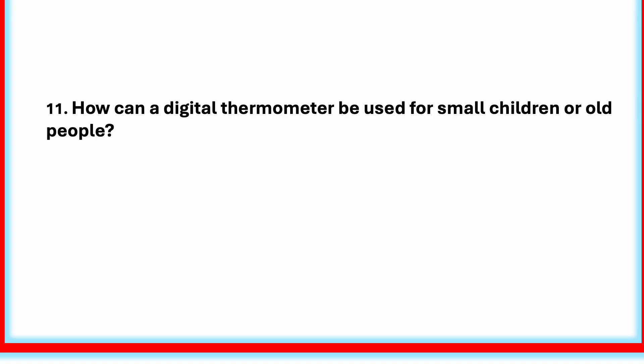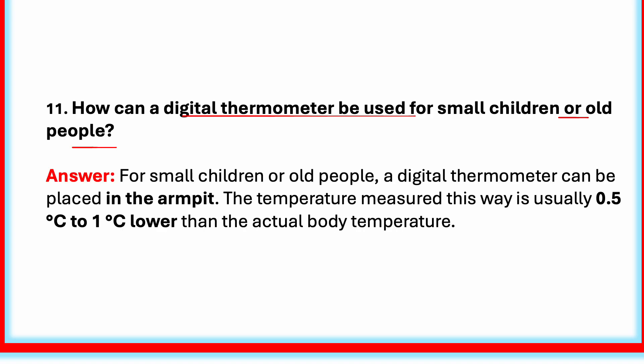How can a digital thermometer be used for small children or old people? For small children or old people, a digital thermometer can be placed in the armpit. The temperature measured this way is usually 0.5 degrees Celsius to 1 degree Celsius lower than the actual body temperature. For example, if a thermometer shows 36 degrees Celsius under the arm, the real body temperature might be 37 degrees Celsius.